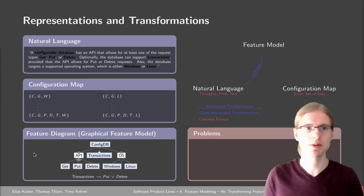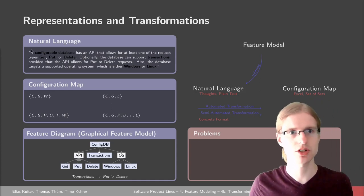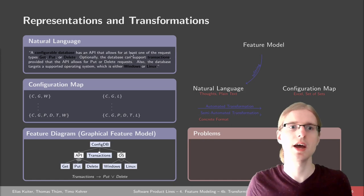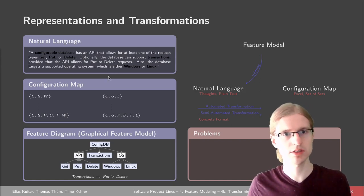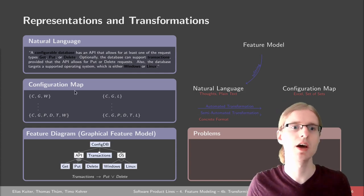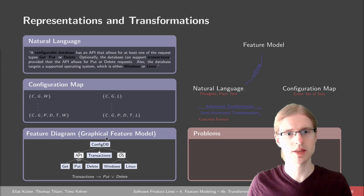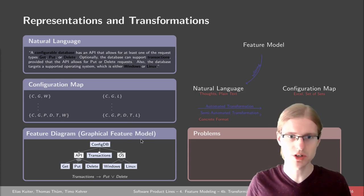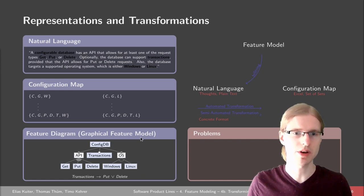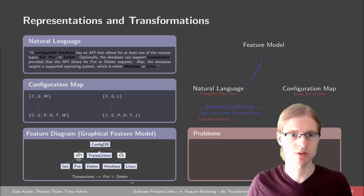First, let's do a quick recap of what we've already seen in the first part. Features can be modeled with natural language just by specifying them in human language and their dependencies. Alternatively, we can write them down as a kind of matrix, as a set of sets or a table, as we've already seen for the database example. We can also write them down using a graphical notation called a feature model — or more specifically a feature diagram — where we have a tree of features and their dependencies, and also cross-tree constraints which model further dependencies that cannot be modeled within the tree.